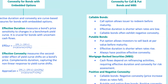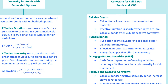A callable bond allows the issuer to redeem the bond before maturity, usually when interest rates drop. This means the bondholder's potential gains are capped because the issuer is more likely to call the bond when rates are low. Effective duration of a callable bond is generally shorter than that of a non-callable bond, especially when interest rates are low — a higher likelihood of being called. As rates decrease, the bond price doesn't rise as much as it would without the call option — this is what we call negative convexity; your upside is limited. If rates drop from 5% to 3%, the callable bond's price might only increase by 5%, whereas a non-callable bond might increase by 8%.